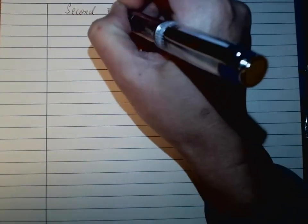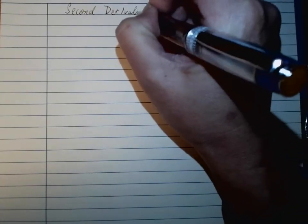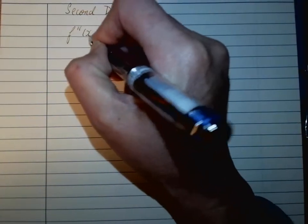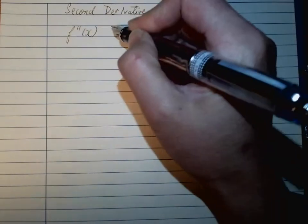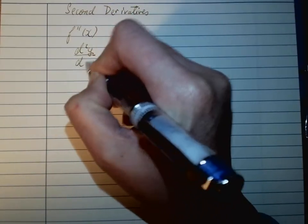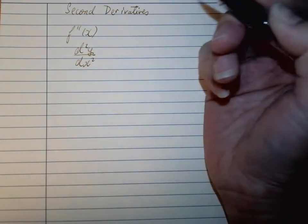Sometimes you are required to have a second derivative, which means that you have to differentiate it twice. So you might see something like f''(x), which we call f double dash x, or you can see d²y/dx², which means that you differentiate twice.